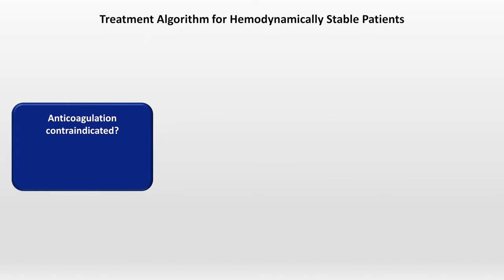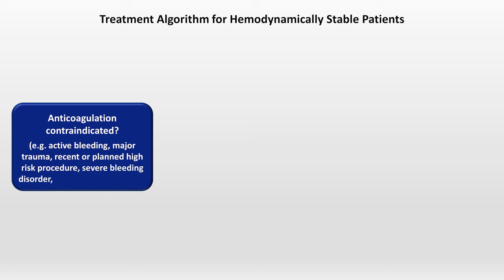Next is how to treat PEs. For hemodynamically stable patients, the first question to ask is whether anticoagulation is contraindicated. An incomplete list of contraindications includes active bleeding, major trauma, recent or planned high-risk procedure, severe bleeding disorders such as hemophilia, and may or may not include intracranial tumors, partly depending on the tumor type. If there is a contraindication, the patient should probably receive an IVC filter.